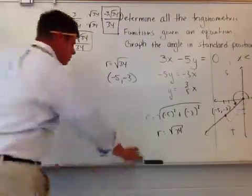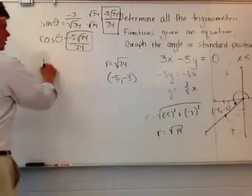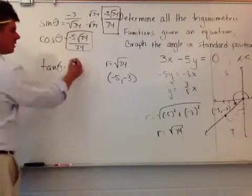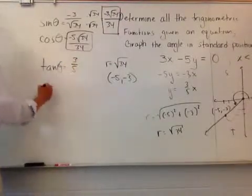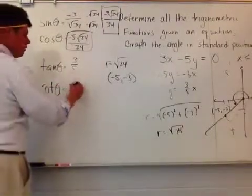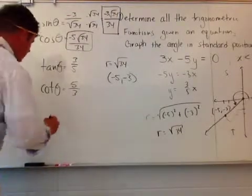Tangent is y over x. So let me give myself a little bit more room here. Tangent is y over x, so it's negative 3 over negative 5, which is a positive 3 fifths. Cotangent theta is just the opposite of that, so it's 5 over 3. So it's reciprocal.